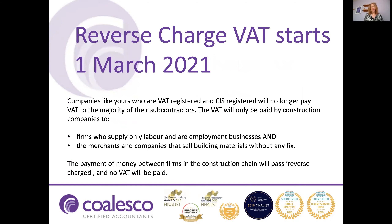The way VAT is paid between businesses in the construction sector will change. Companies like yours who are VAT registered and CIS registered will no longer pay VAT to the majority of their subcontractors. The VAT will only be paid by construction companies to firms who supply only labour and are employment businesses, and the merchants and companies that sell building materials without any fix. The aim is to collect VAT from the few contractors at the top of the construction tree who interface with the customers, rather than numerous smaller subcontractors who HMRC think are less reliable.